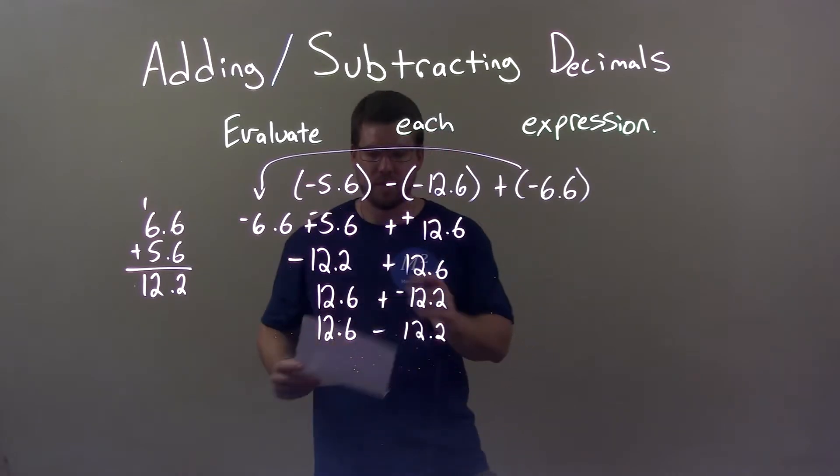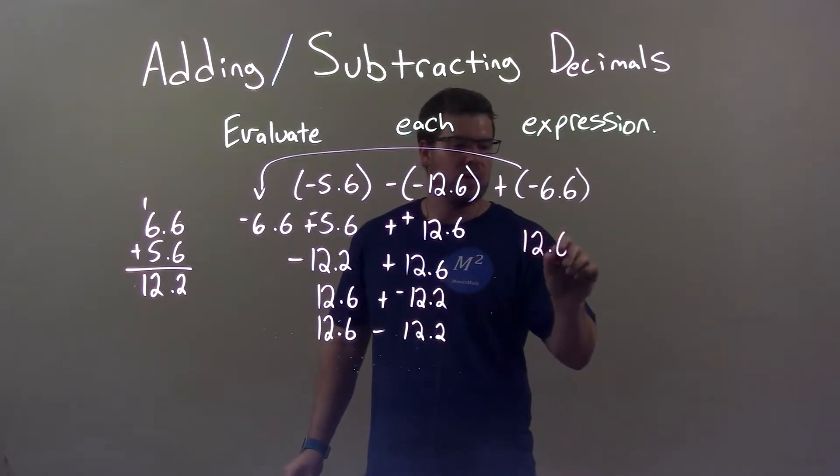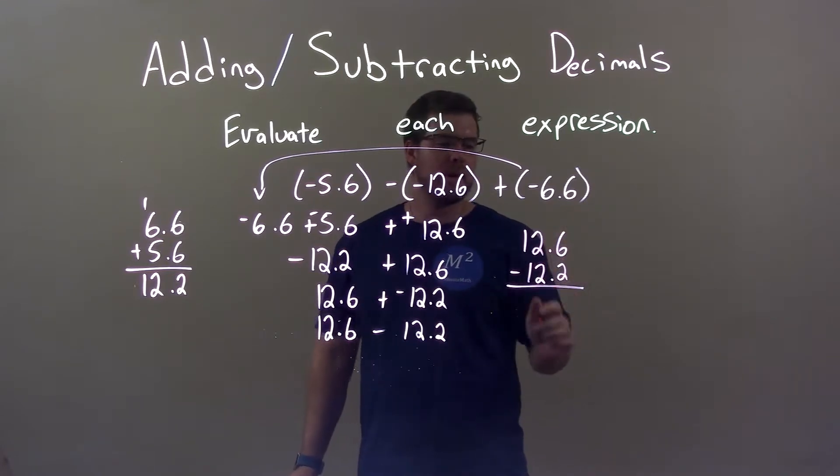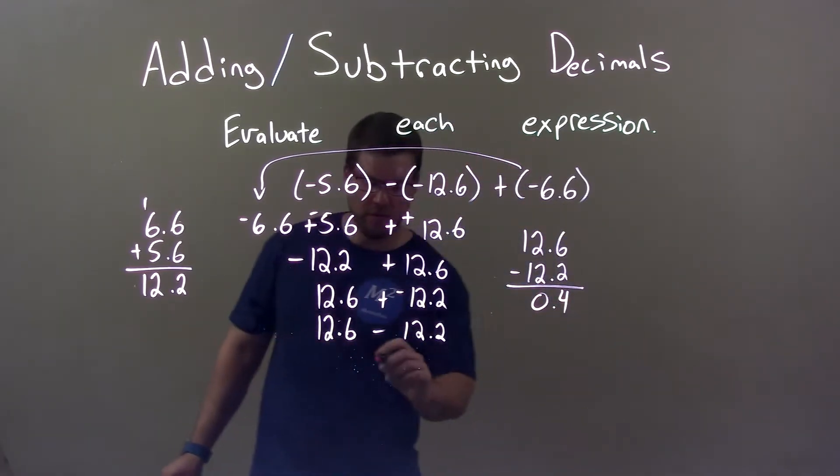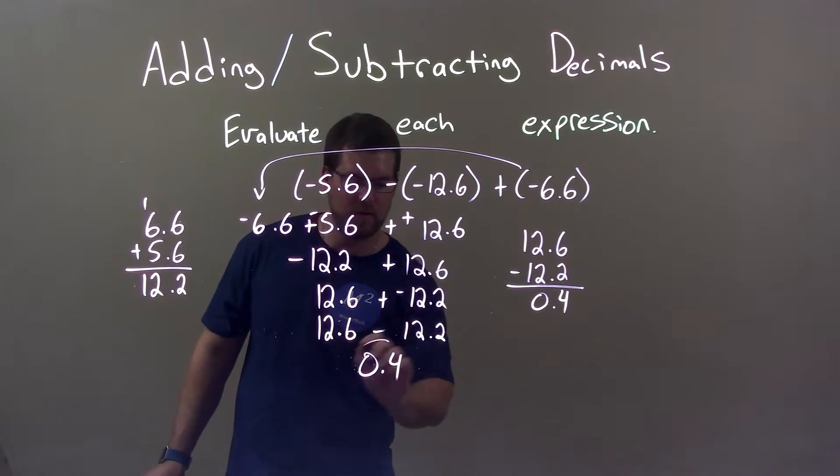And that one's pretty easy to do. So put it right here, 12.6 minus 12.2. 6 minus 2 is a 4, decimal place right there. 12 minus 12 is a 0, if you can see it like that, right? So we just have 0.4. So our final answer here is just 0.4.